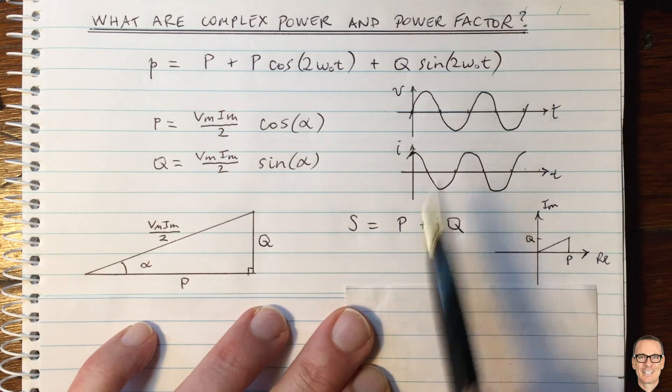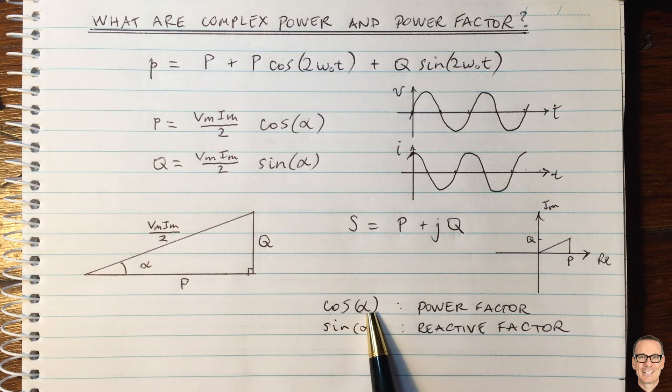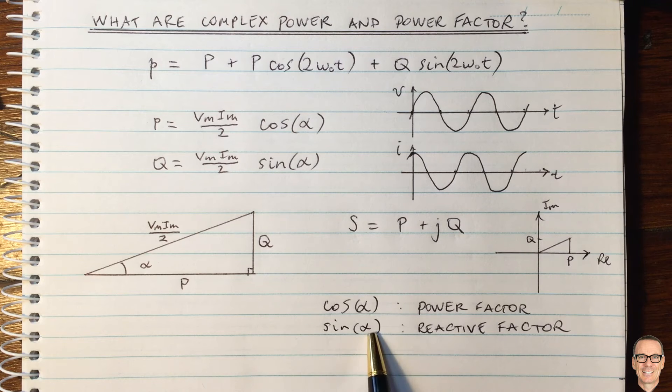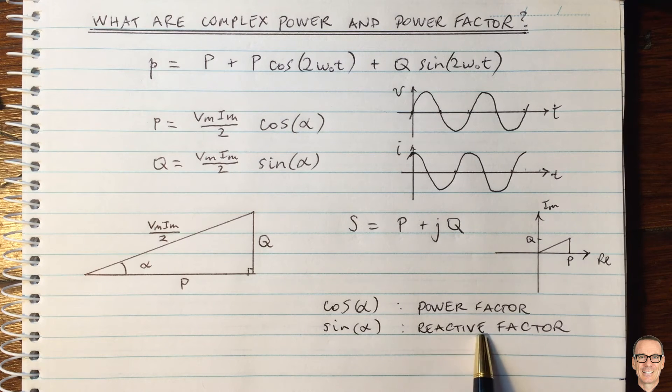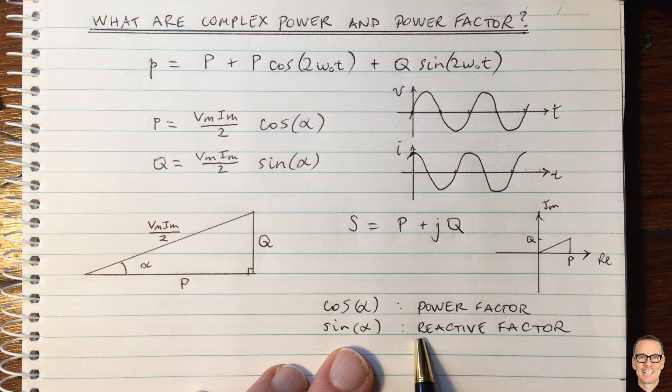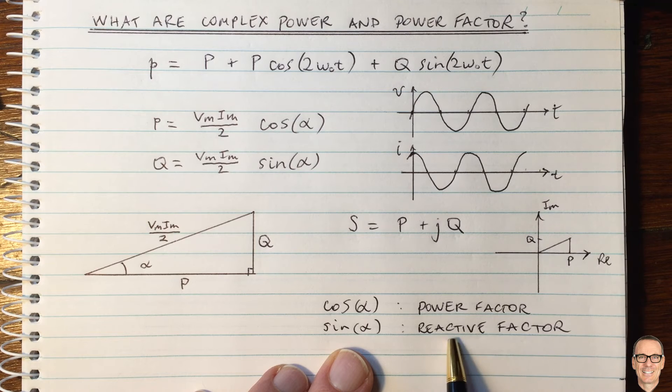What about this power factor? Well, simply they are definitions. So cos of alpha is defined to be the power factor, sine of alpha is defined to be the reactive factor. And again, for more information and insights into what reactive power is, check out the description below. You'll find a video on reactive power.